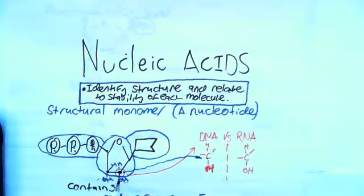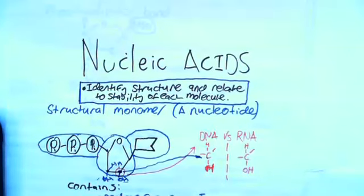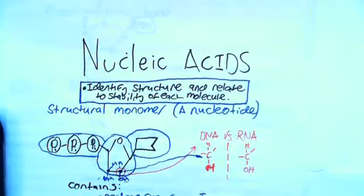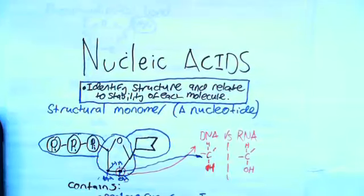DNA is just missing this oxygen in the OH group, so the number two carbon just has two H's bonded to it, whereas RNA has H and OH. That actually accounts a lot for the stability of these molecules. That's pretty much why DNA is very stable and RNA is much less stable.